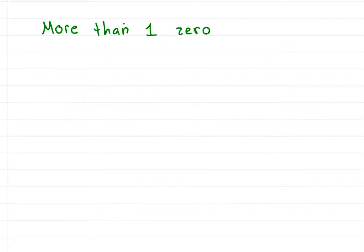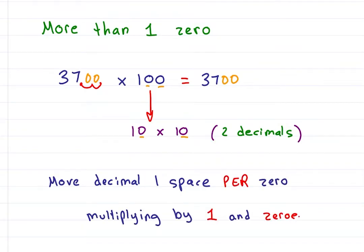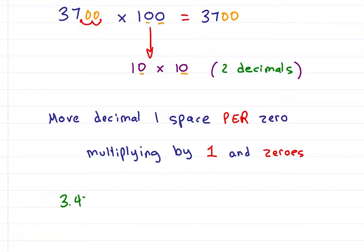What if you have more than one 0, like 37 times 100? 100 is really just 10 times 10, because every 0 is another 10 and another decimal. 37 times 100 means you added two 0s because you moved the decimal twice for 3700. You move the decimal one space per 0 when multiplying by a number that has 1 followed by 0s. With this in mind, can you solve 3.47 times 1000 in your head? We count three 0s and move the decimal three spaces to the right, fill in the missing 0, for a final answer of 3470.